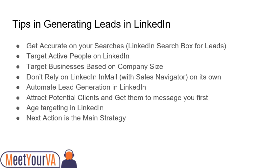Tip number two is to target active people. Some leads are not active and don't usually use LinkedIn. You can filter active people by using Sales Navigator, where there is an option to target active people — this is useful when you get thousands in the search results. Tip number three is to target businesses based on company size; go to revenue size and filter based on their revenue size.